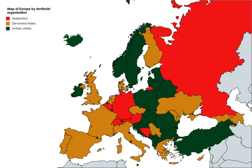According to Daniel Ziblatt's Structuring the State, there are four competing theoretical explanations in the academic literature for the adoption of federal systems. Ideational theories hold that a greater degree of ideological commitment to decentralist ideas in society makes federalism more likely to be adopted.